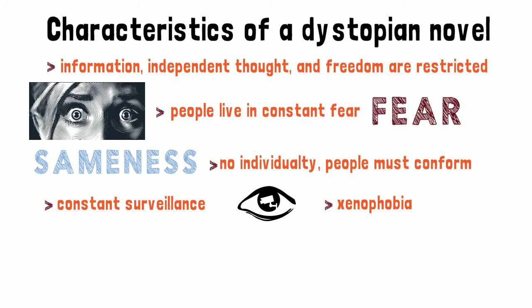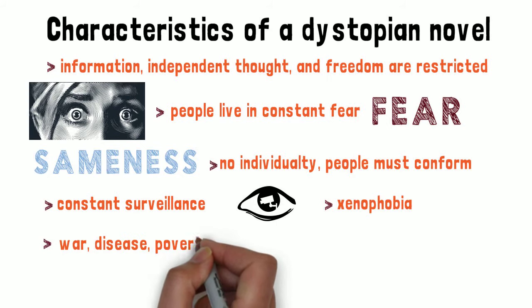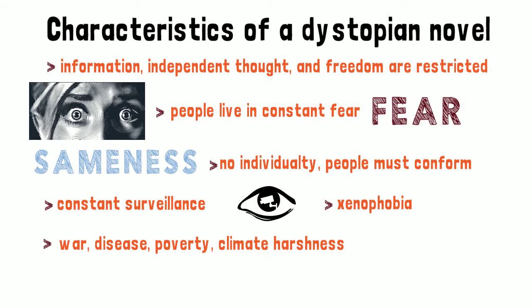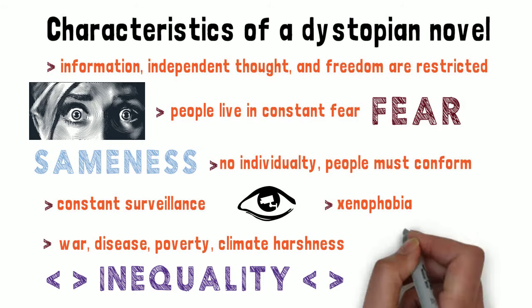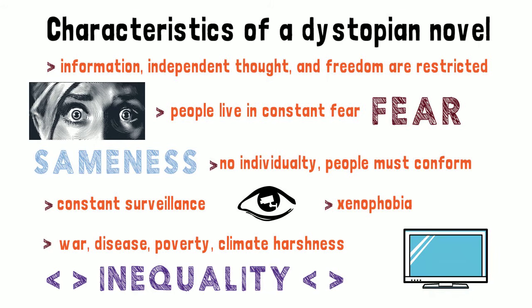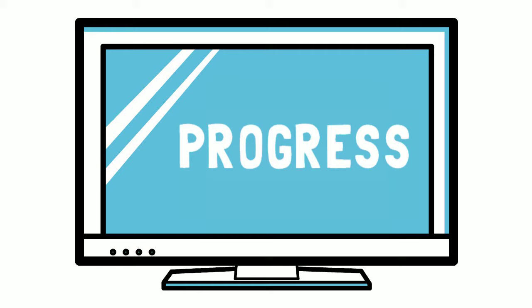There is often war, disease, poverty, or climate harshness. There is also inequality, which may be between ranks, classes, and castes in society, or gender. There is little or no chance of upward mobility. Since dystopian novels and films are usually set in an imagined future, there is also generally a lot of technology. People might be convinced by propaganda that technology represents improvement and progress, when really it is just one more element of physical and thought control.